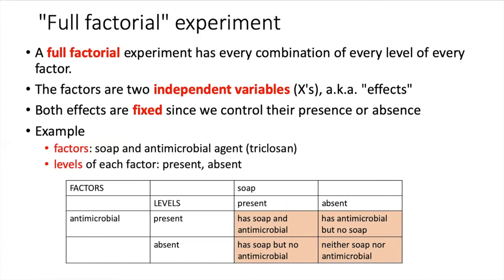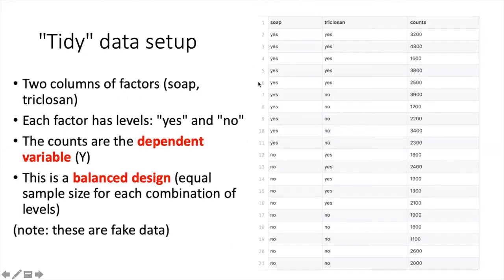A fixed effect is one where the experimenter fixes the state of that factor, as opposed to having that state be determined randomly and simply recording what it is. This is what happens in a randomized controlled trial, where we assign treatments to trials and control the state of their levels for each factor.